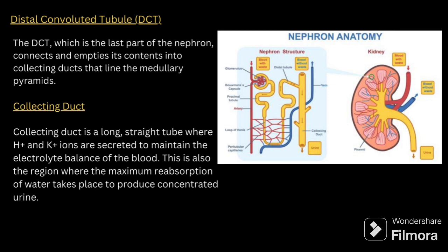The distal convoluted tubule connects and empties its contents into the collecting duct that lines the medullary pyramids. The collecting duct is a long straight tube where hydrogen and potassium ions are secreted to maintain the electrolyte balance of the blood. This is also the region where minimum reabsorption of water takes place to produce concentrated urine. Please refer to images or search in Google so you can easily understand how these structures are related.